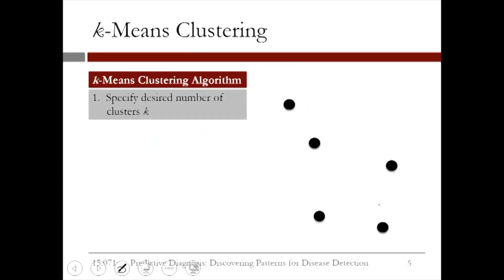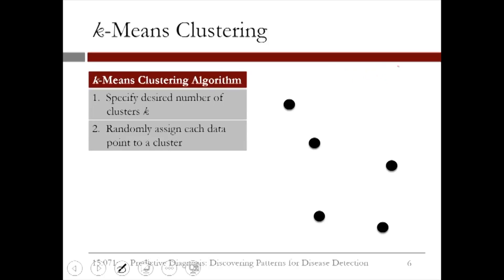Let us illustrate the k-means algorithm in action. We specify the desired number of clusters k. In this case, we use k equals 2. We then randomly assign each data point to a cluster. In this case, we have three points in red and two points in black.